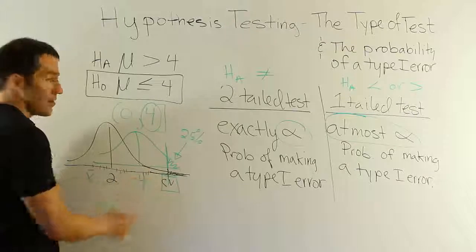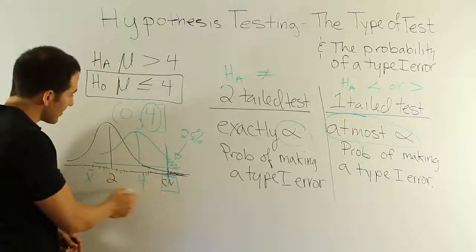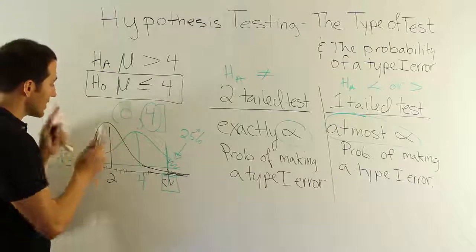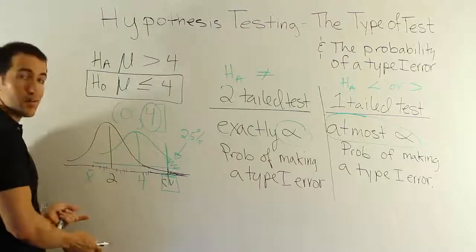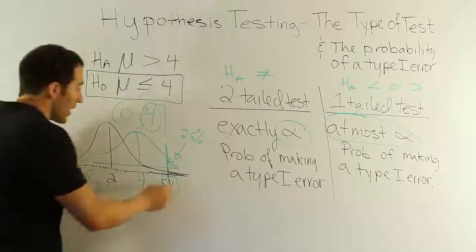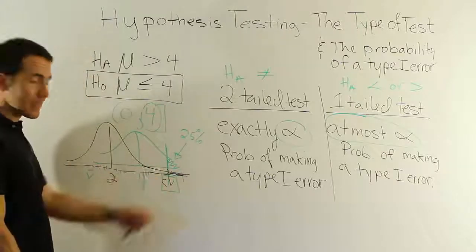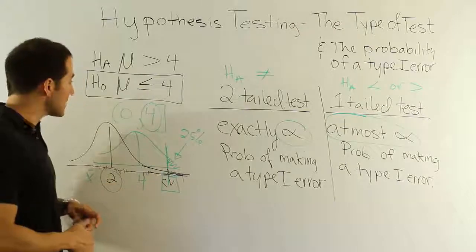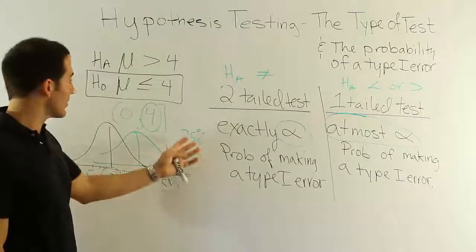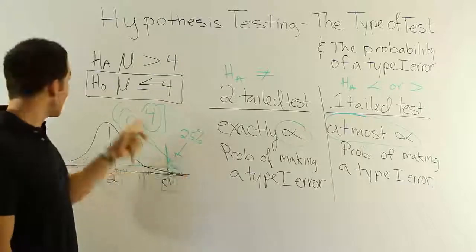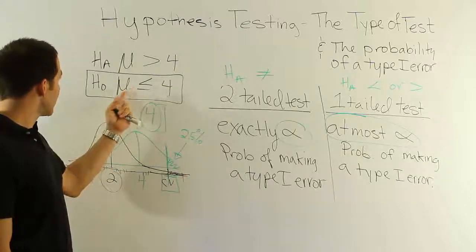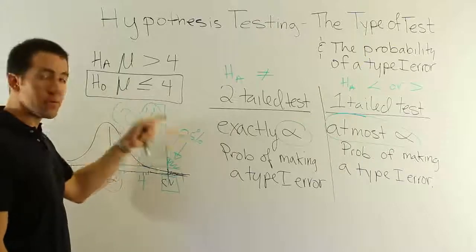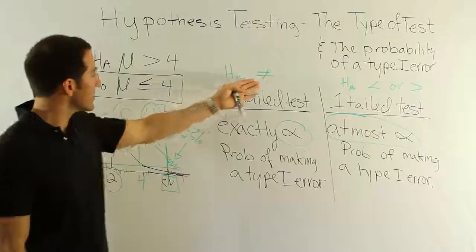Sometimes you might get an extreme sample value. But on the green curve, that would still be in the do not reject region. The only way you would reject H0 if the real mean was 2 is if you somehow got an x-bar value way over here. That's not very likely to happen if the mean is really 2. So what that's saying is that the maximum chance of committing a Type 1 error, the worst-case scenario, is 2.5%. In any other option, if the real mean value is not 4 but it's any other number in here, that probability will be less.